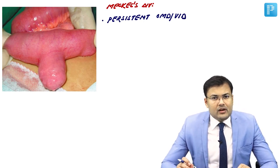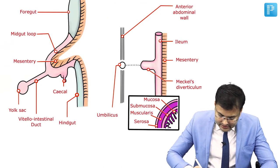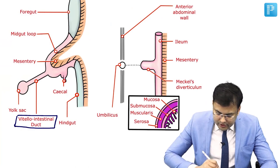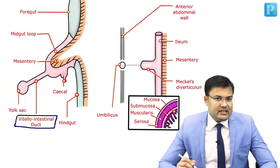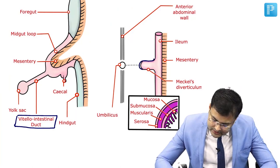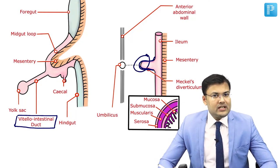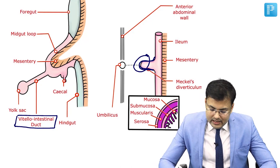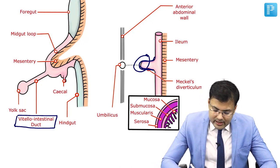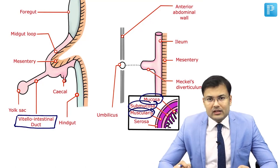Looking at the anatomy diagram: this is the omphalomesenteric duct, also known as the vitelointestinal duct. Whenever there is abnormal persistence of this duct, this is known as Meckel's diverticulum. In Meckel's diverticulum you can see there is mucosa, submucosa, and muscularis — all three layers — so it is a type of true diverticulum.